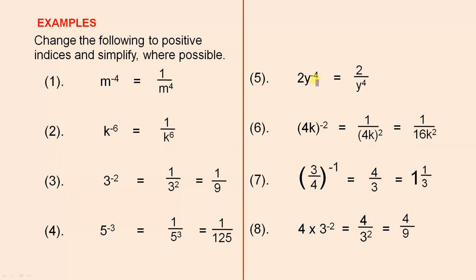2y to the power of minus 4. Now, the negative 4 here only applies to the y. So we have 2 over y to the power of 4. That's the answer.